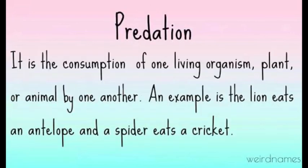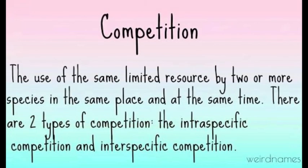Predation is the consumption of one living organism — plant or animal — by another. An example is the lion eats an antelope, and the spider eats a cricket. Competition is the use of the same limited resource by two or more species in the same place and at the same time. There are two types of competition: interspecific competition and intraspecific competition.